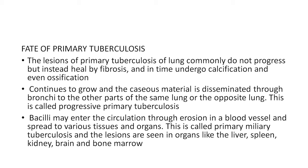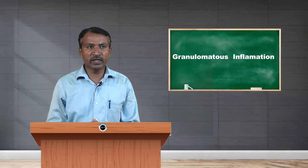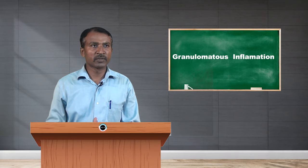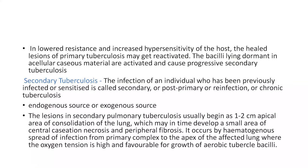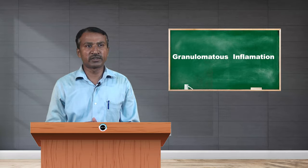In miliary tuberculosis, lesions are seen in organs like the liver, spleen, kidney, brain, and bone marrow. In cases of lowered resistance and increased hypersensitivity of the host, the healed lesions of primary tuberculosis may get reactivated — bacilli lying dormant in the acellular caseous material are activated and cause progressive secondary tuberculosis.